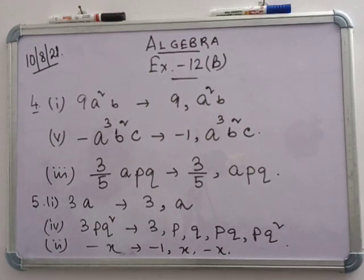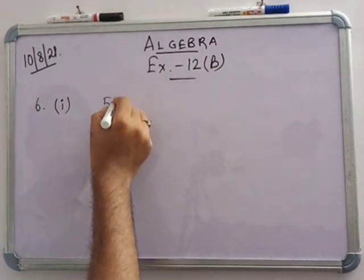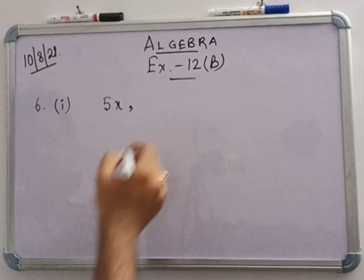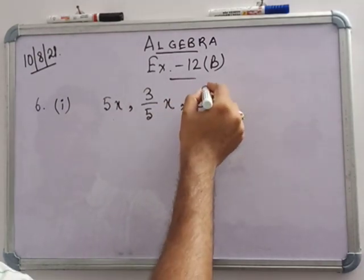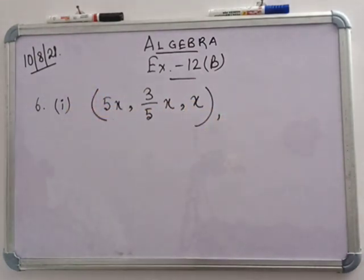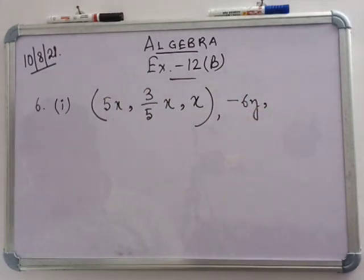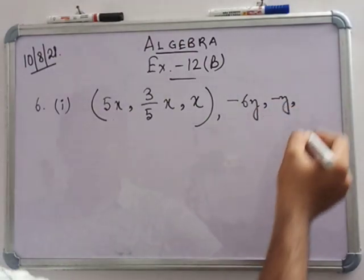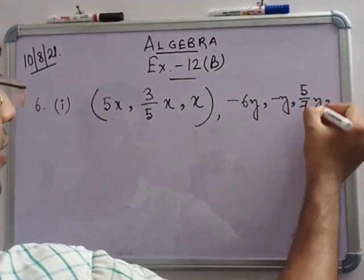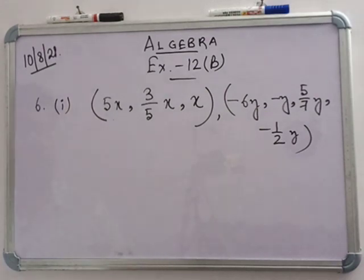In question 6, find the like terms. In number 1, the like terms for x are: 5x, 3 by 5x, and x. The like terms for y are: minus 6y, minus y, 5 by 7y, and minus 1 by 2y.